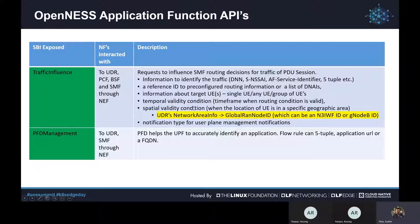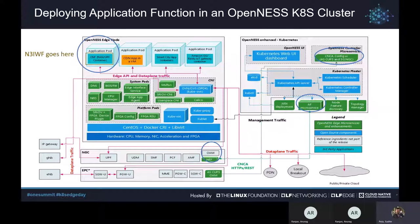The most important one is the spatial validity condition. This is where the N3IWF can come into picture. Through the AF, you can tell the core network which global RAN node ID — whether it is an N3IWF ID or a gNodeB ID — through which you want to steer traffic to the edge location. OpenNESS also provides APIs for PFD management, or packet flow description management. By accessing the UDR and SMF through the network exposure functions, the PFD helps the UPF to accurately identify an application. The AF microservice runs as a pod in the Kubernetes control plane and communicates with the network through the reference or third-party network exposure function.